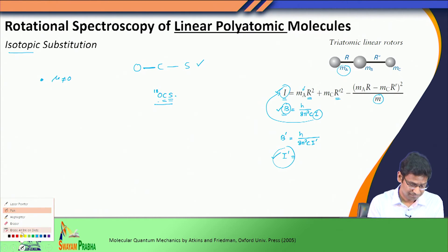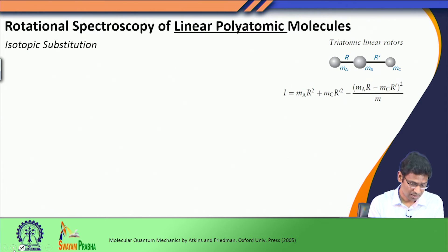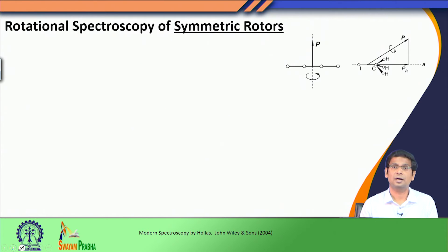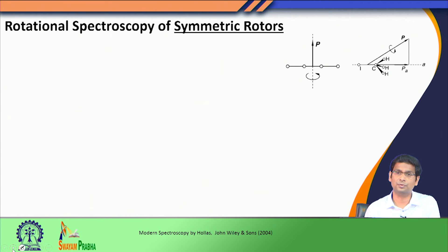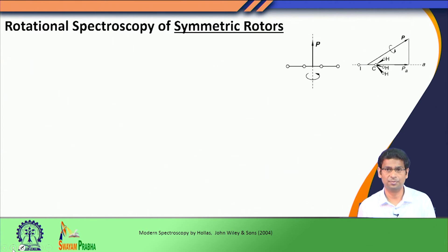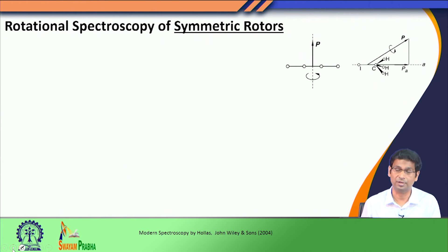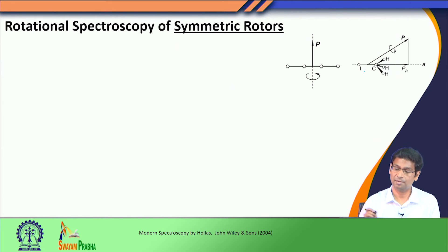Apart from linear molecules, there are other classes of molecules. One such class is symmetric rotors — they can be either prolate or oblate type. We will do this discussion mostly for the prolate type; discussion for the oblate will follow in a similar fashion.